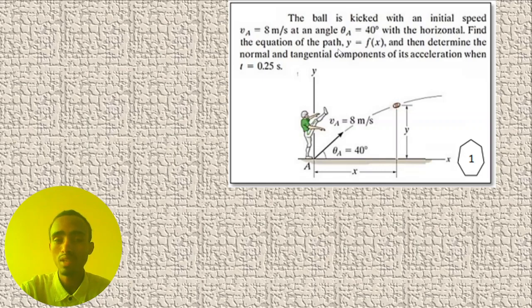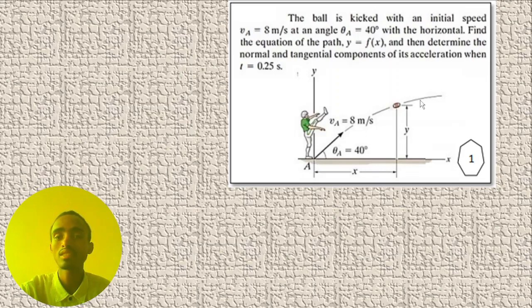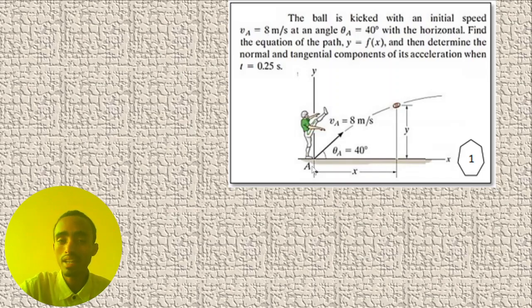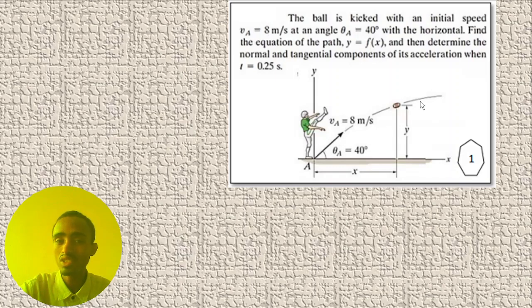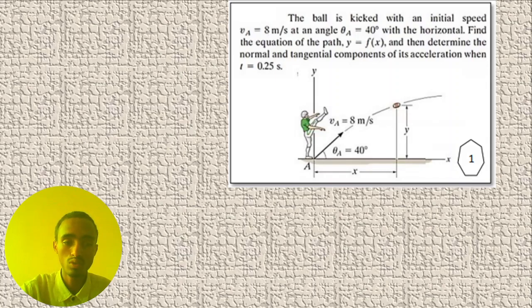We are asked to determine the path function of the board. As you can see, the board follows this path, and that path has its own function. Finally, we need to determine the tangential and normal acceleration at time t equals 0.25 seconds.